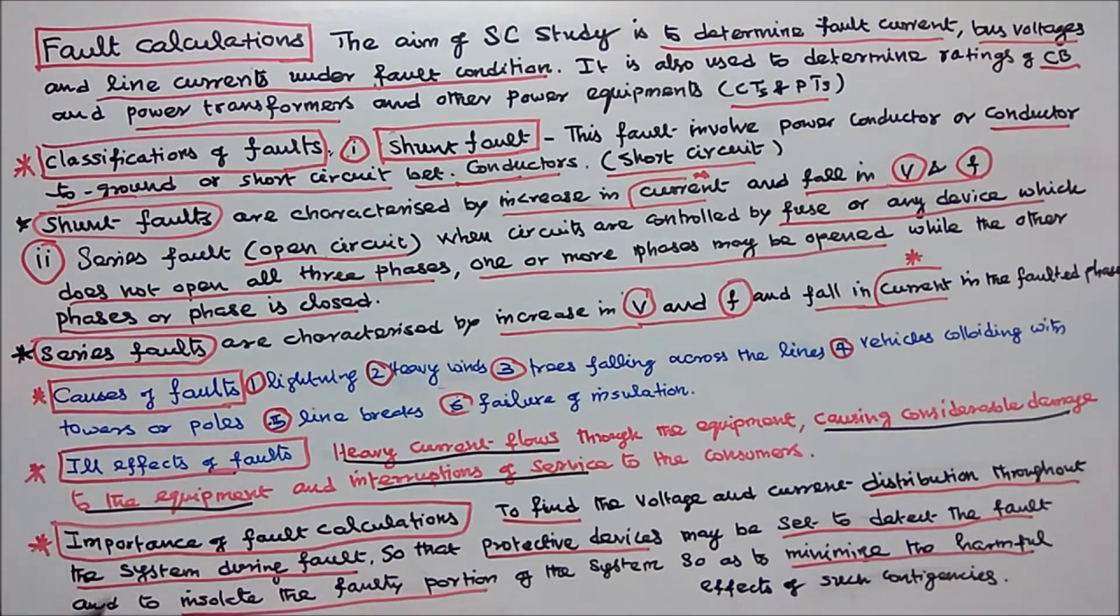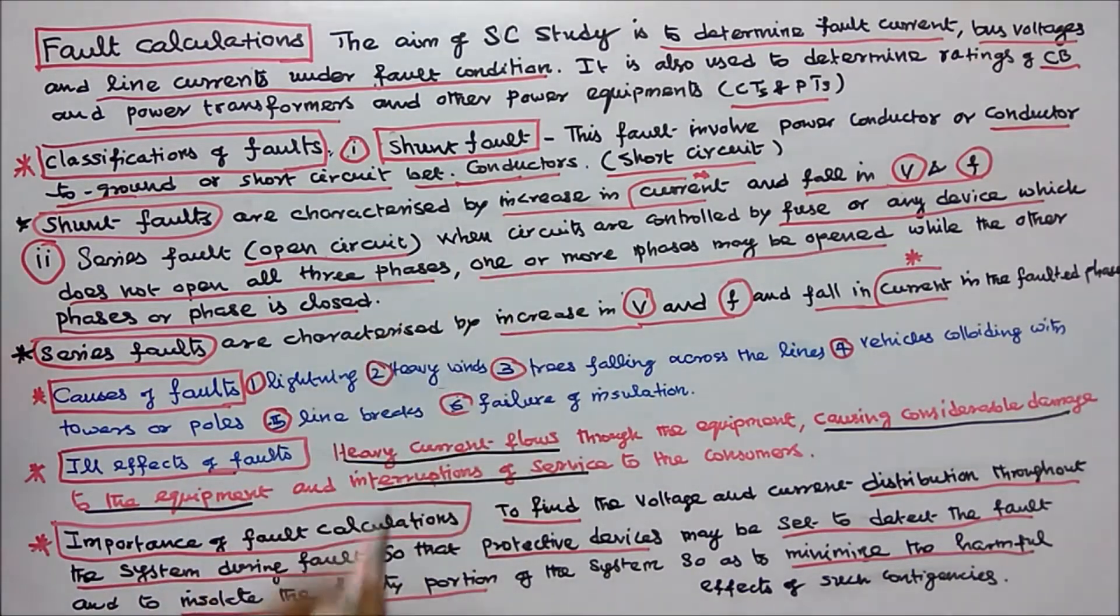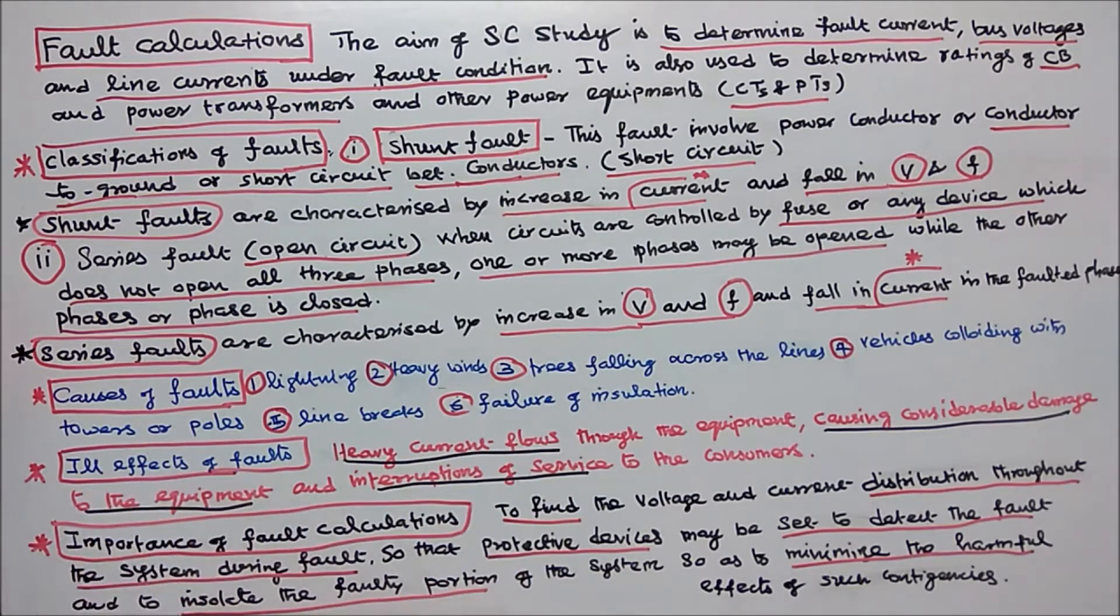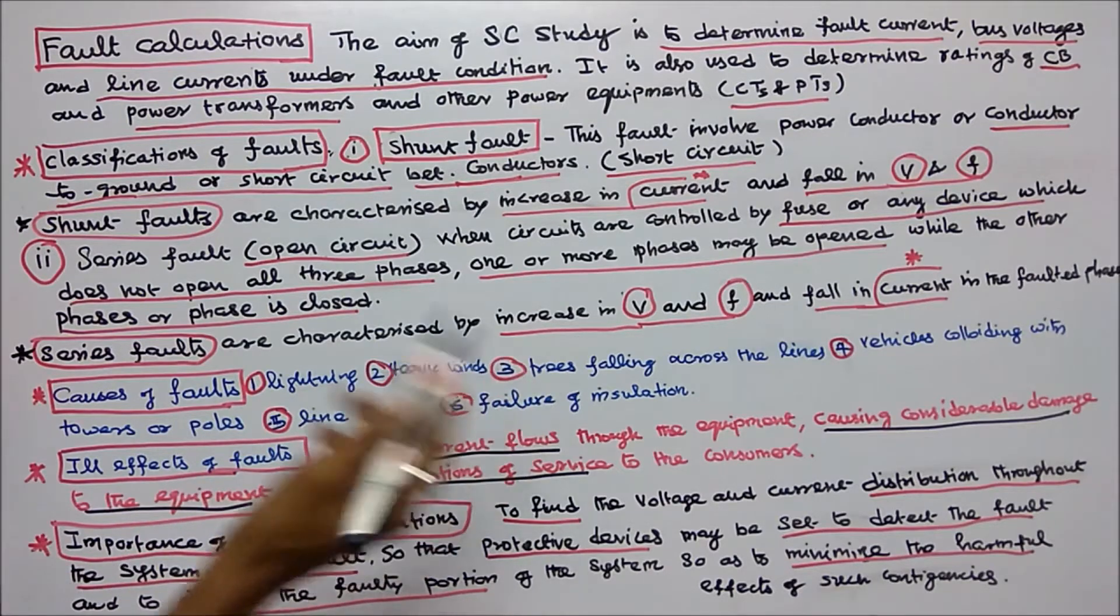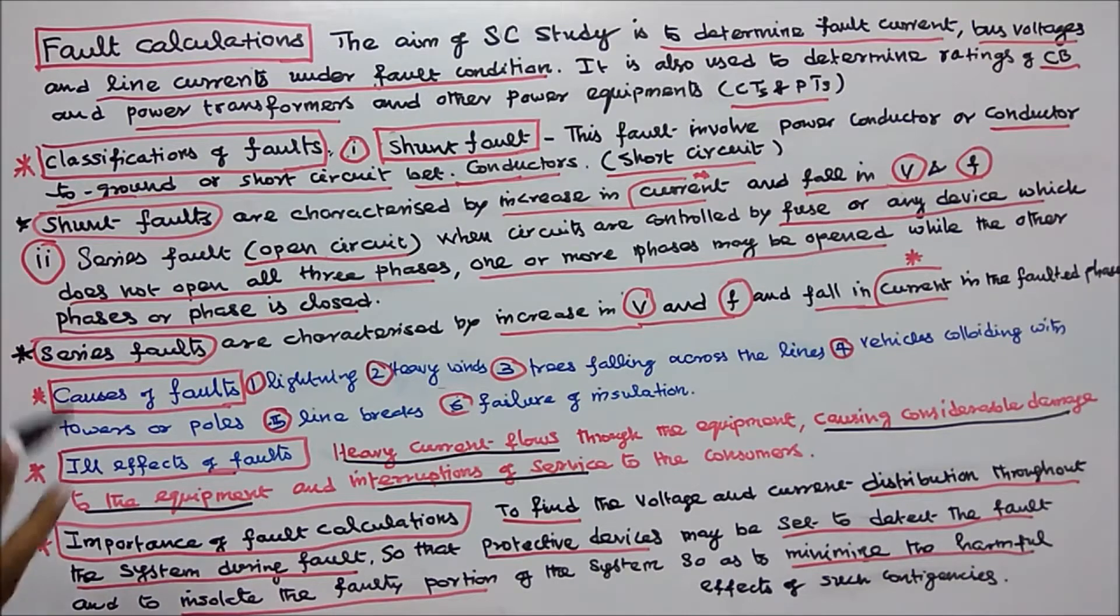Causes of faults: Number one, lightning. Number two, heavy winds. Number three, trees falling across the lines. Number four, vehicles colliding with the towers or poles. Number five, line breaks. Number six, failure of insulation.